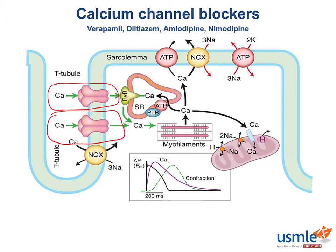This will drop contractility because there will be a decrease in the amount of intramyocyte calcium. Remember, the amount of calcium directly relates to contractile ability. Verapamil is more selective for the L-type calcium channels in the myocardium than diltiazem. These drugs are also useful for binding the calcium channels that pacemaker cells use for their phase 0 depolarization.